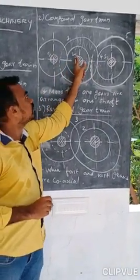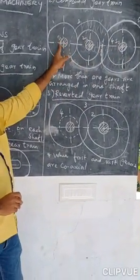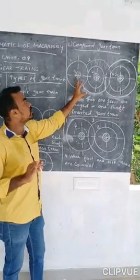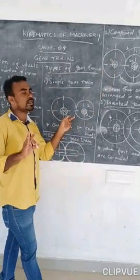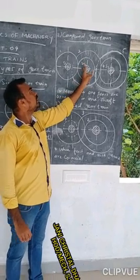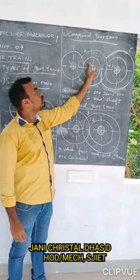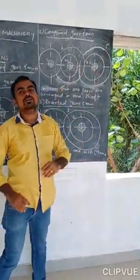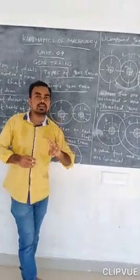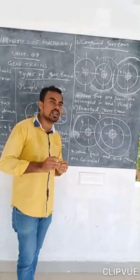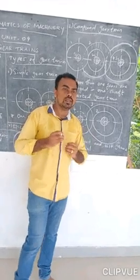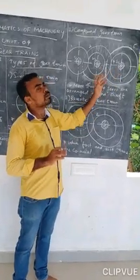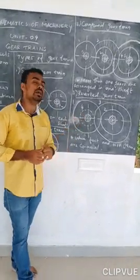In the compound gear train diagram: shaft 1 has one gear; shaft 2 has two gears — gear 2 and gear 3 mounted on the same shaft; shaft 3 has gear 4. So in shaft 2, there are two gears — that is what makes it a compound gear train. The number of shafts — one, two, or three — depends on the application.